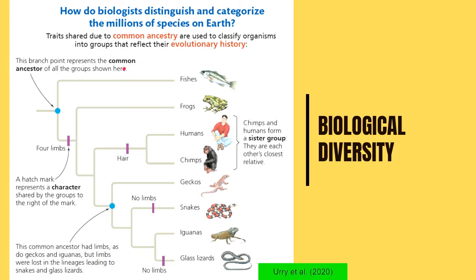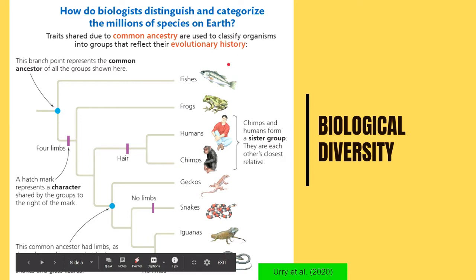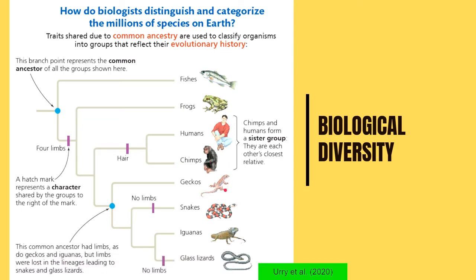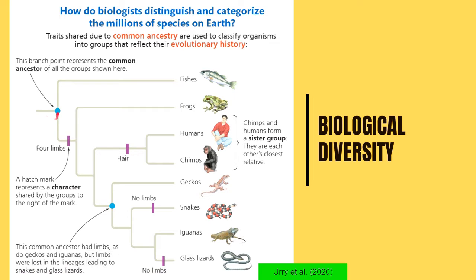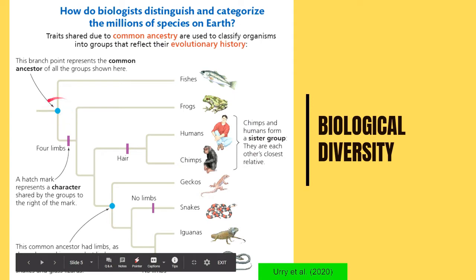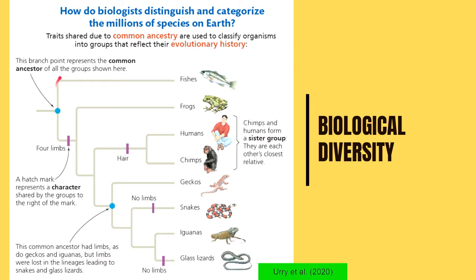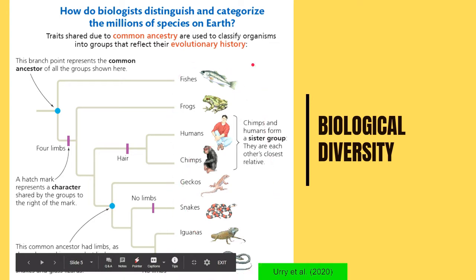How do scientists visualize this? For example, all these organisms — fishes, frogs, humans, chimps, geckos, snakes, iguanas, and glass lizards — at some point in the past all shared a common ancestor. This ancestor is common to all of them, and is their most primitive ancestor. Over time, their ancestors evolved into several groups, giving rise to all these different species, but again they all shared a common ancestor.